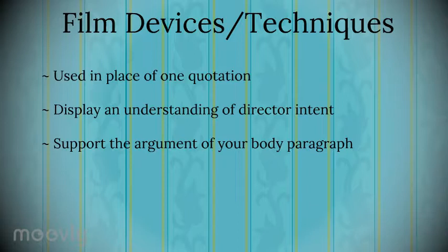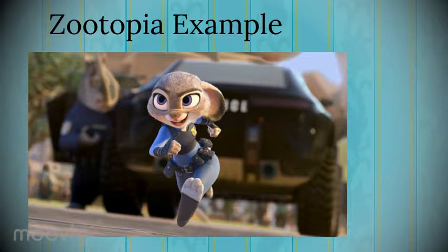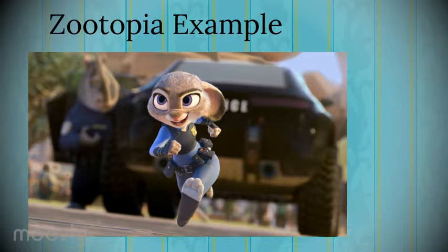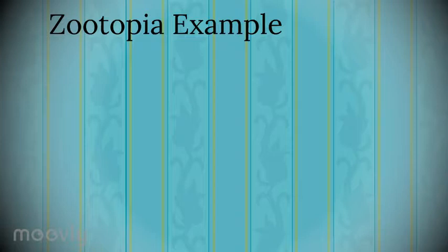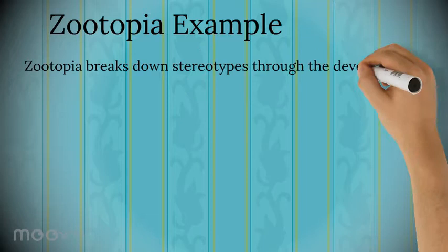The first example I'm going to go through is a Zootopia example. We can see the image here that I will be putting into my body paragraph. In it, the small rabbit Judy is of equal height to the rhino. I'm going to be talking about how this blurred background allows us to see the growth and development of Judy Hopp as a character. The essay question I'll be answering is: Zootopia breaks down stereotypes through the development of its characters. Discuss.